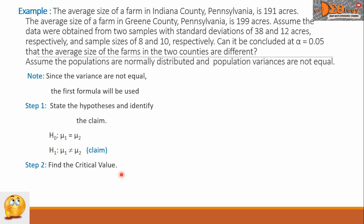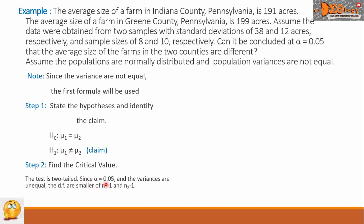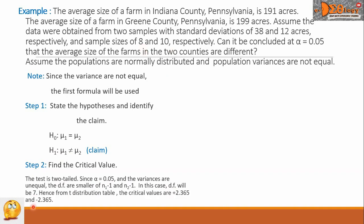Step 2 is to find the critical value. The test is two-tailed, as indicated by the not-equal sign in the alternative hypothesis. Since alpha equals 0.05 and the variances are unequal, the degree of freedom is the smaller of N sub 1 minus 1 and N sub 2 minus 1, which gives 7 (that is 8 minus 1). From the t-distribution table, the critical values are positive 2.365 and negative 2.365.